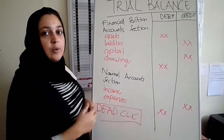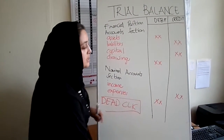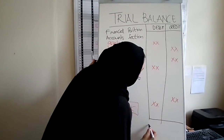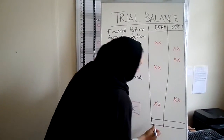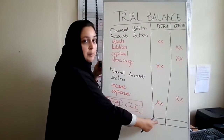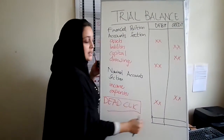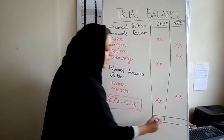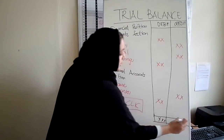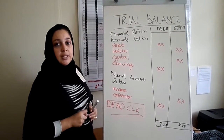Once you're done listing all of your accounts with your amounts, right at the bottom of your trial balance you have to add up the columns. Add up everything on the debit side and put the total in. Add up everything on the credit side and put that total in. Those two totals need to be the same. That's it for trial balance.